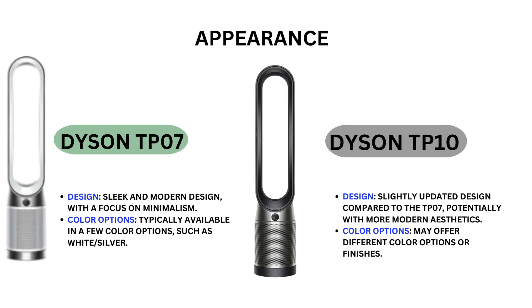Appearance — Dyson TP-07 design: sleek and modern design with a focus on minimalism. Color options: typically available in a few color options such as white and silver. Dyson TP-10 design: slightly updated compared to the TP-07, potentially with more modern aesthetics.